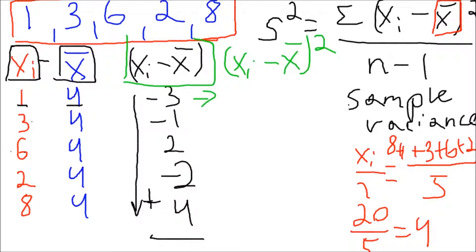So, the negative 3 squared becomes positive 9. Remember, all negatives are becoming positive now. Negative 1 squared is 1, 2 squared is 4, negative 2 squared is 4, and 4 squared is 16.